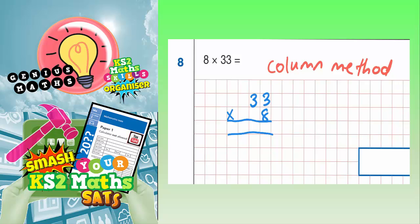So we've got 8 times 3 is 24. Put the 4 in, carry the 2. And 8 times 3 is 24 again, plus the 2 that I've just carried is 26.